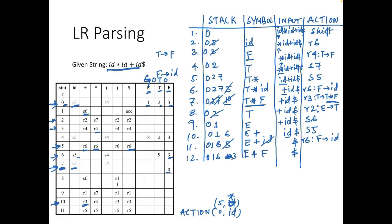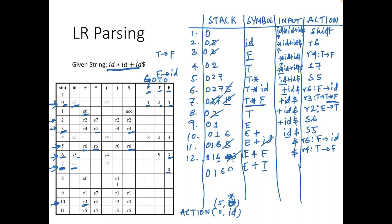Top of stack is 3 and current input is $. action[3, $] is r4. Rule 4 is T → F. So F is reduced to T — one symbol reduced, one state popped. Top of stack becomes 6. goto[6, T] gives 9. Stack becomes 0, 1, 6, 9. Input is only $.